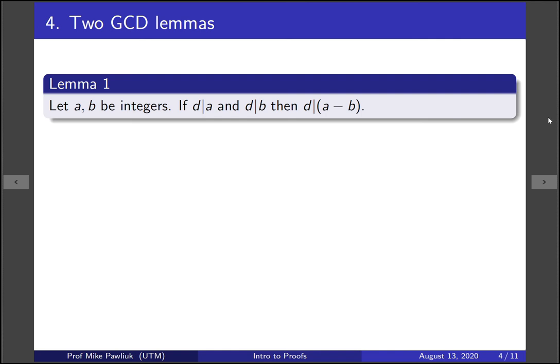We'll start out with a proof of the Euclidean algorithm that it works, and to do that we need two important lemmas. The first one is an easy lemma. It says if you have two integers, and d divides a and d divides b, then d divides the difference. This is not a surprising result, and you can prove this just by writing down the definitions.